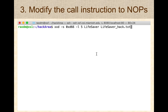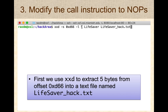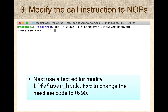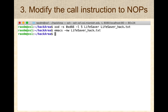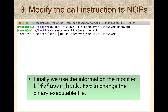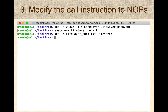The first step is to extract just the five bytes of the instruction I want to modify into a text file, because text is much easier to modify than binary. I'm going to use xxd on Linux to extract those five bytes into a file called lifesaver_hack.txt. Then I'll use a text editor to modify all of the opcodes to NOPs, which is 0x90 in hexadecimal for the x86 architecture. I converted all five bytes to NOPs, saved the text file, and then ran xxd again to replace those five bytes in the lifesaver executable with NOP instructions.